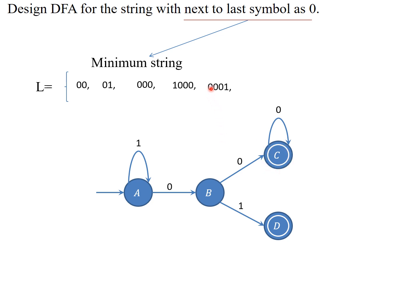Look at another possible valid string: next-to-last symbol is zero — like zero zero one zero one. There is a one after the zeros on state C, but there is no transition for one in C. You have to create a transition from C to D. When you land in D, this string is valid — after three zeros followed by one, you land in D, and D is a final state, so it is accepted. There is also no transition on zero in D, so create that transition.